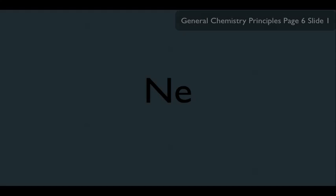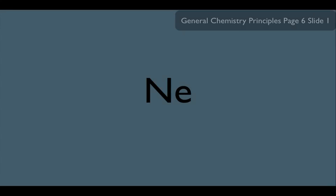In order to understand bonding, we have to understand something called the octet rule. So for instance, consider Neon right here. If we wanted to know his electronic configuration, we would determine it to be simply 1s2, 2s2, 2p6.